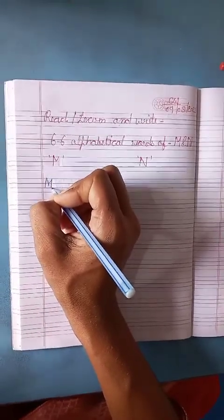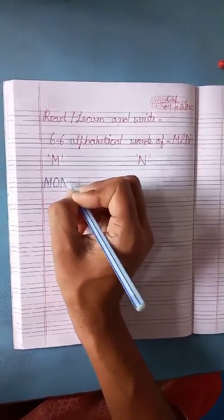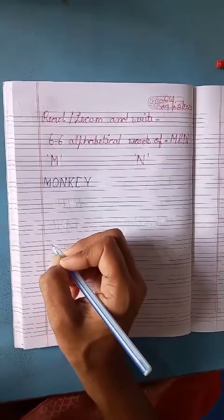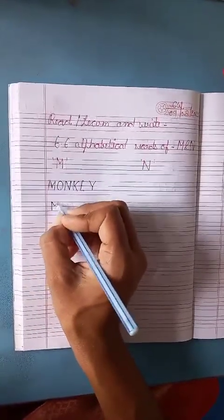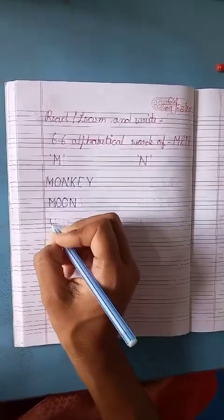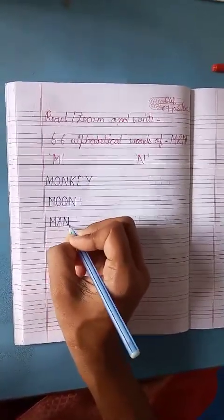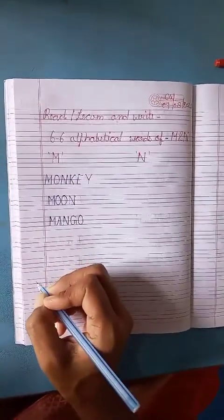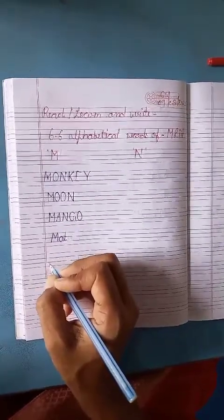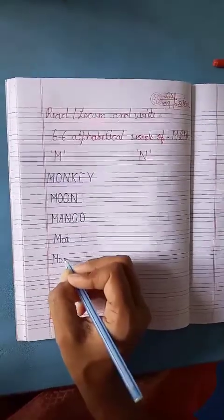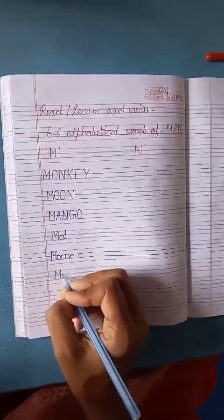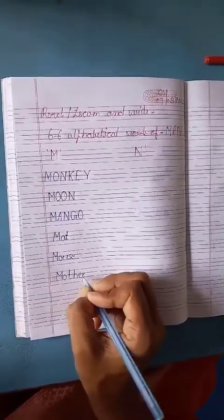Alphabetical words of M: M-O-N-K-E-Y, Monkey. M-O-O-N, Moon. M-A-N-G-O, Mango. M-A-T, Mat. M-O-U-S-E, Mouse. M-O-T-H-E-R, Mother.